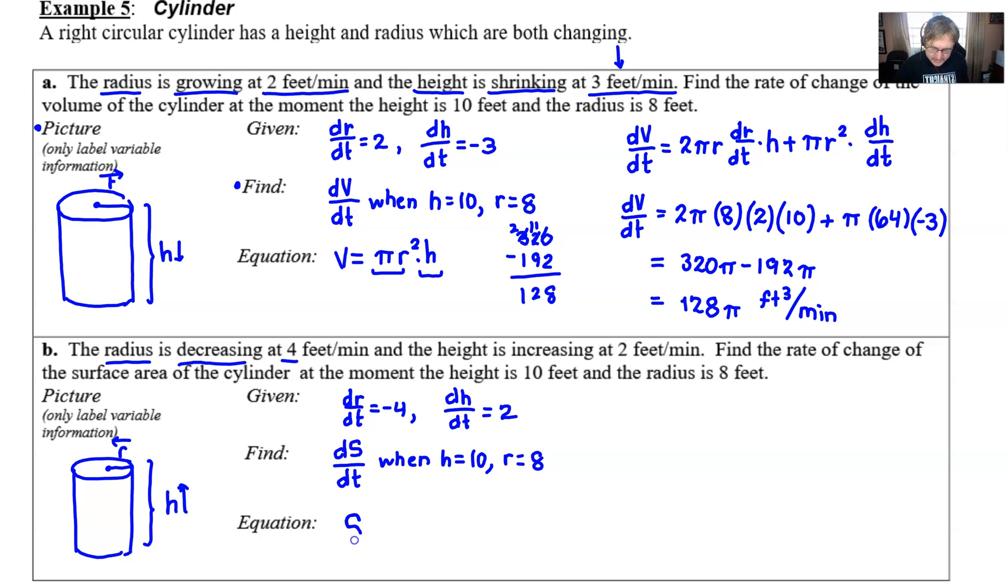Now obviously a big change is the equation. We're going to be using the equation for surface area. This is another equation that would be provided to you. Basically the surface area is just a pair of circles—you've got a circle on the top and the bottom of your cylinder, so πr² multiplied by 2.